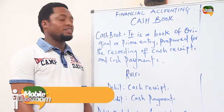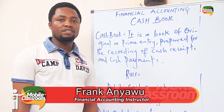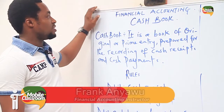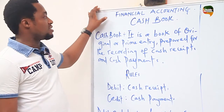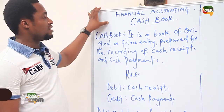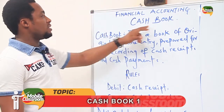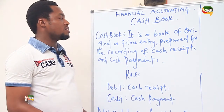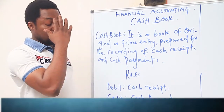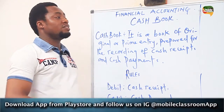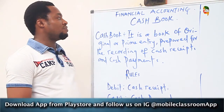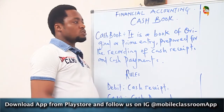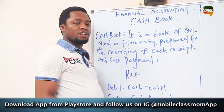Good viewers, my name is Frank, the financial accounting instructor. Today we shall be looking at a topic called cash book. Cash book is a member of subsidiary books, because there are six books in the subsidiary books.